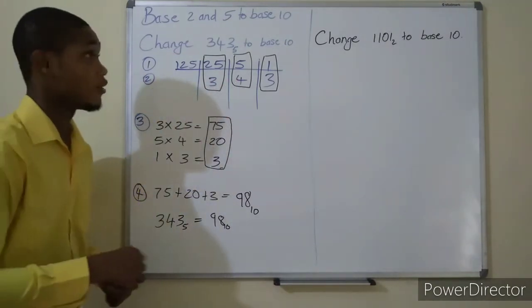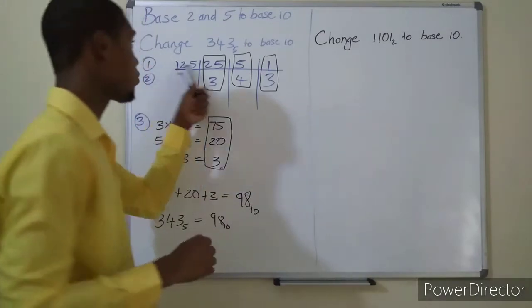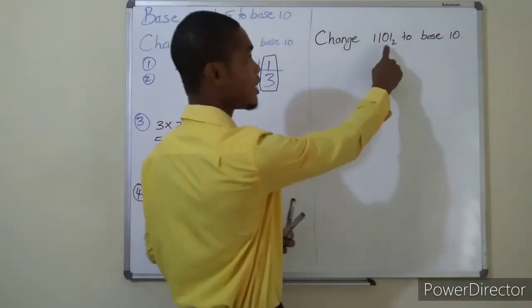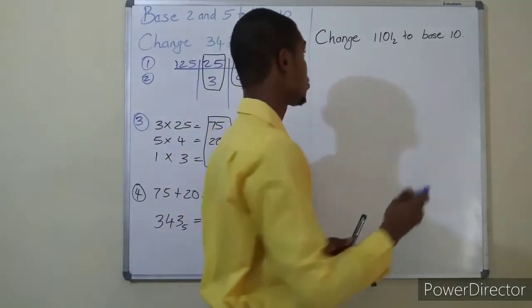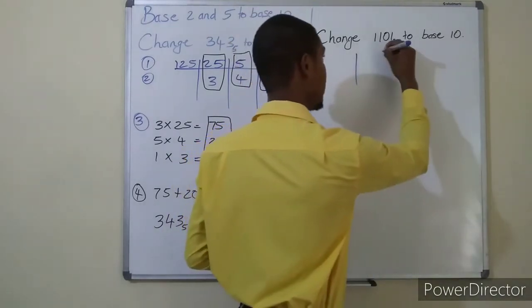The procedure now going with base two is the same thing. Step one, create your table. We are in base two on this side, so you are going to create your base two table. You'll create your columns.